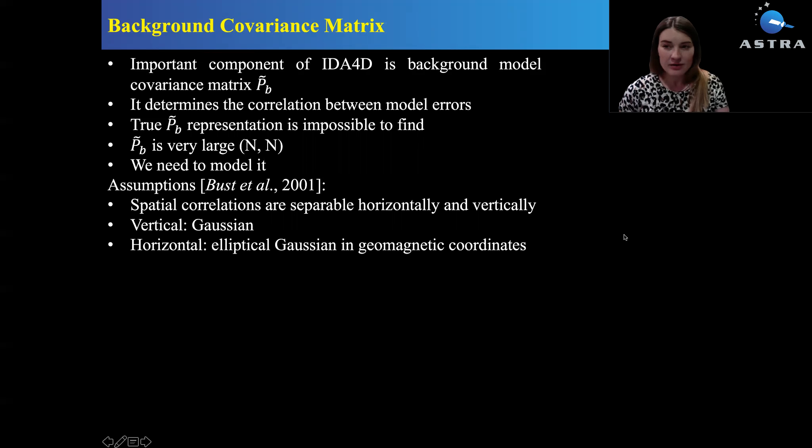We need to find a way to model this matrix. There are three assumptions used for this purpose. The first assumption is that we can separate horizontal and vertical correlations. Another assumption is that vertical correlations can be modeled by Gaussian and horizontal can be modeled by elliptical Gaussian.